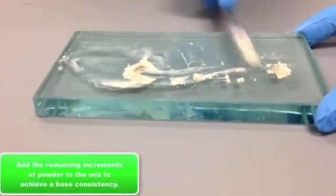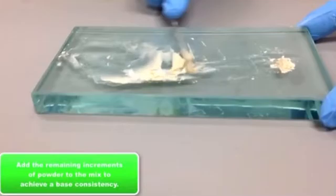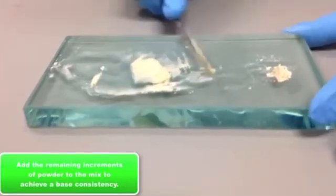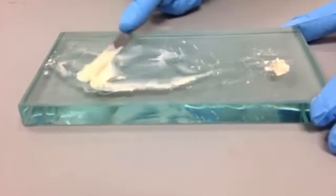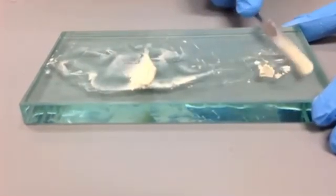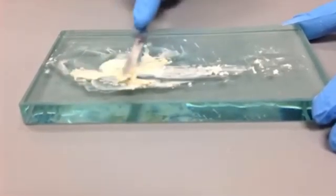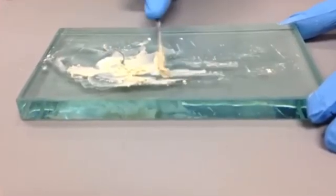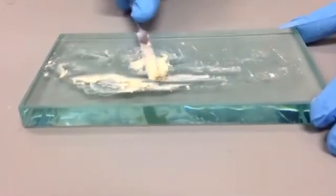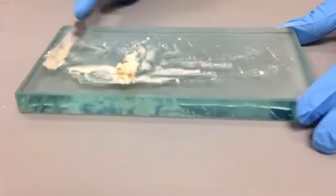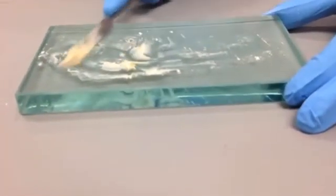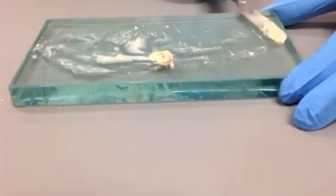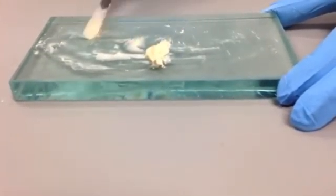And now she will continue to add powder to get it into a more stiff base-like material. And ideally, once you get to that consistency, you will be able to actually roll it into a ball or sometimes it's nice to roll it into a cigar shape if you're putting it into a temporary or restorative situation where you want to cut off pieces of the cigar shape.